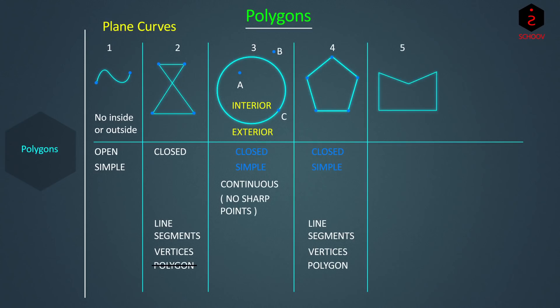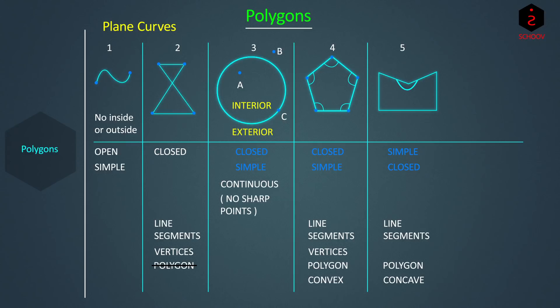Let's draw one more figure — figure five. It is also simple, closed, and made up completely of line segments, but there is one difference between four and five. In five, this angle is greater than 180 degrees and hence it seems to bend inside itself, or become concave from outside. Whereas in four, all angles inside the boundary — the interior angles — are less than 180 degrees, so it is convex from outside. Polygons such as five are called concave polygons and those such as four are called convex polygons. In this topic we will study only convex polygons.